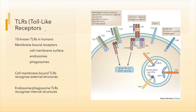There are 10 known toll-like receptors in humans. They are membrane-bound receptors found on the cell surface — transmembrane or integral proteins that span across the cell membrane. They are also found embedded in the membranes of endosomes and phagosomes, in addition to the actual cell membrane itself.